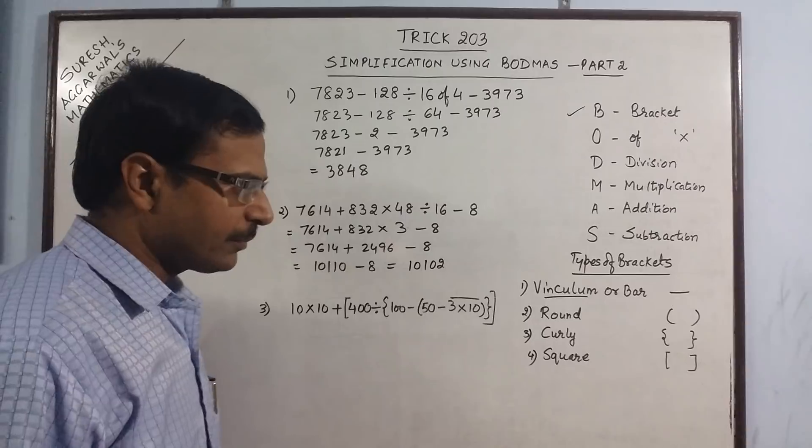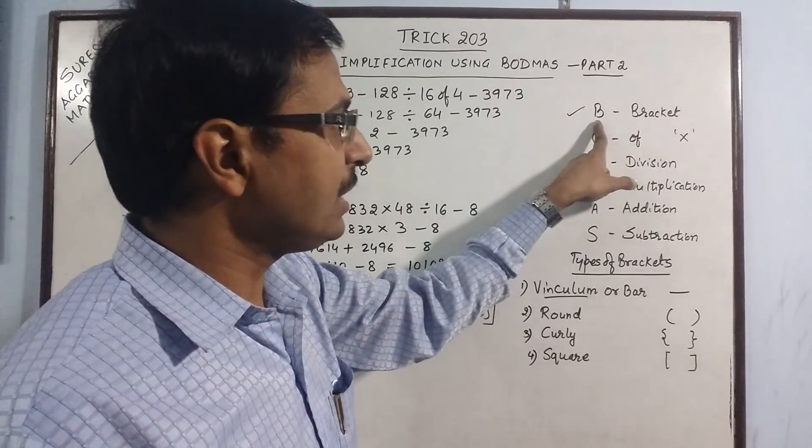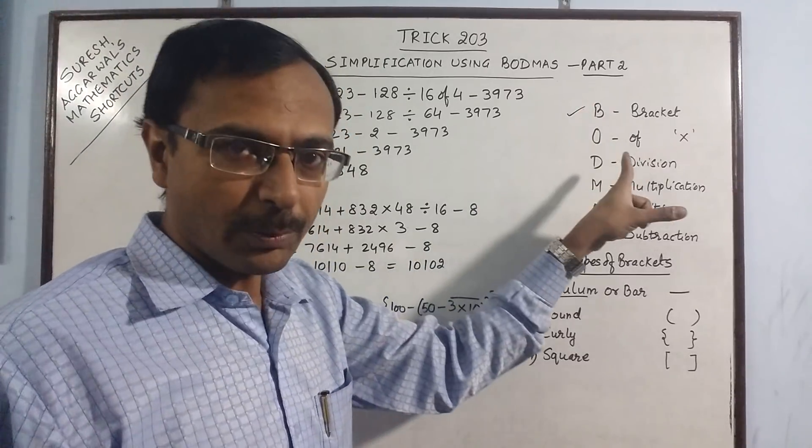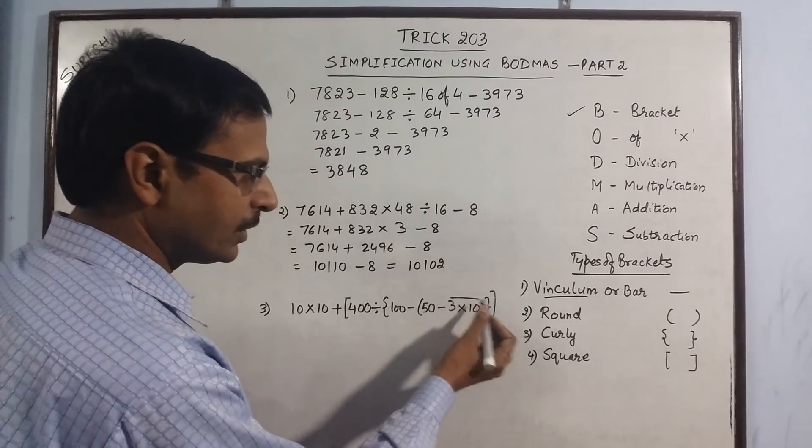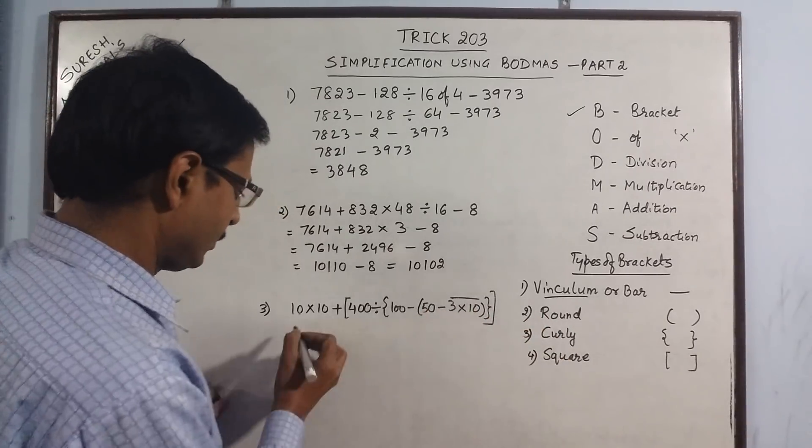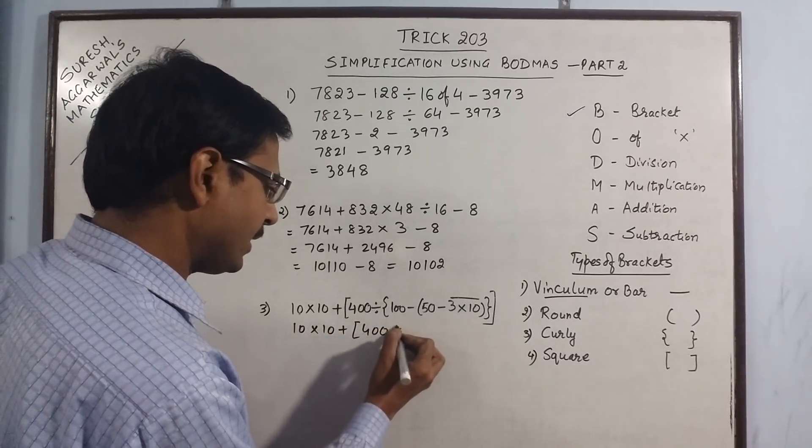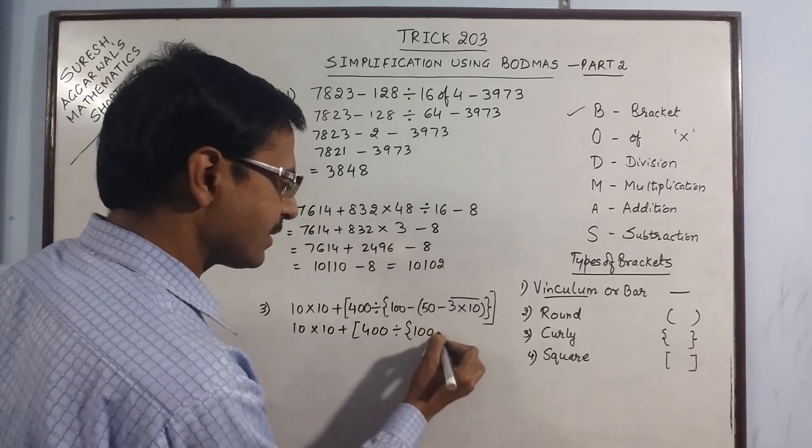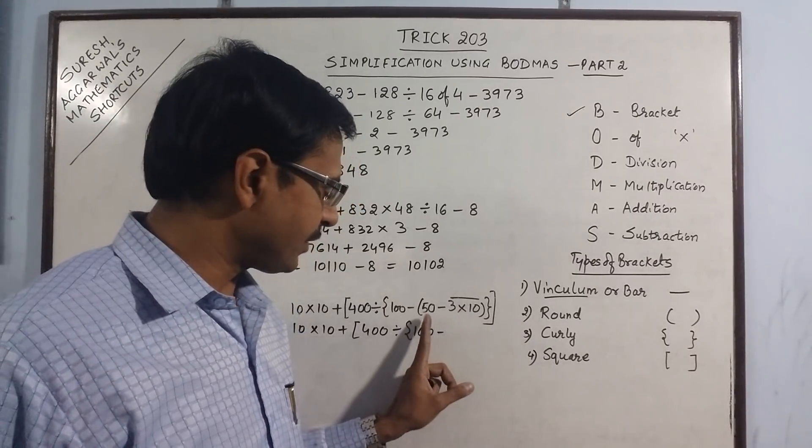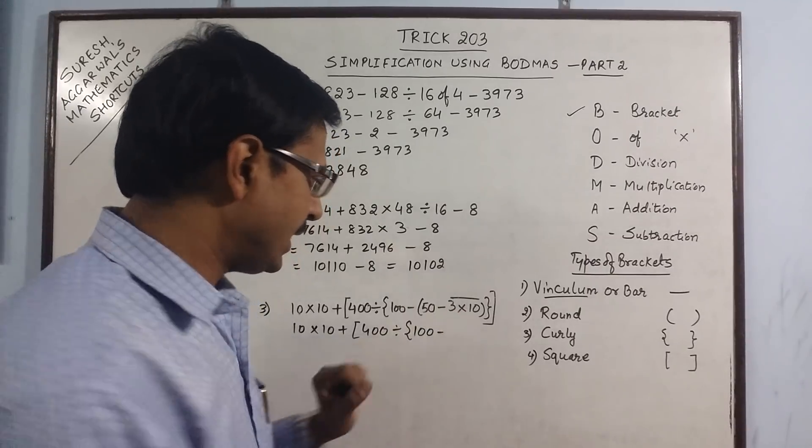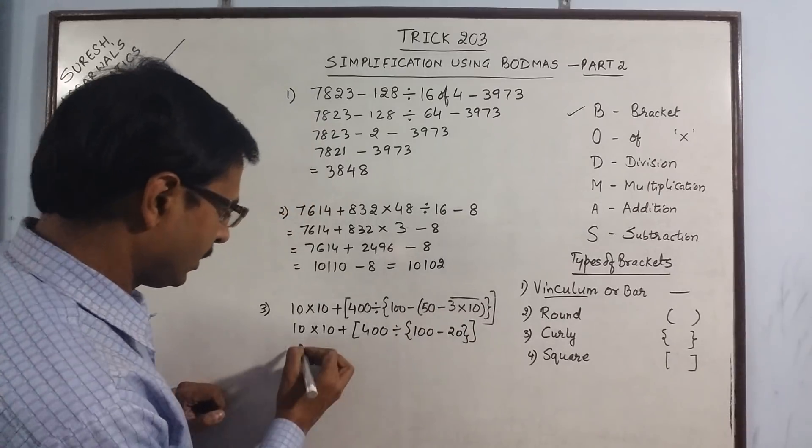Now to this problem. See here you have brackets, and whenever you have brackets then B is on the top priority, and that too in this order. I am removing this vinculum and the round bracket together: 10 into 10 plus 400 divided by 100 minus, now see first remove the vinculum, 3 into 10, this is 30, so 50 minus 30, 20 is 20. Now 2 brackets are gone.